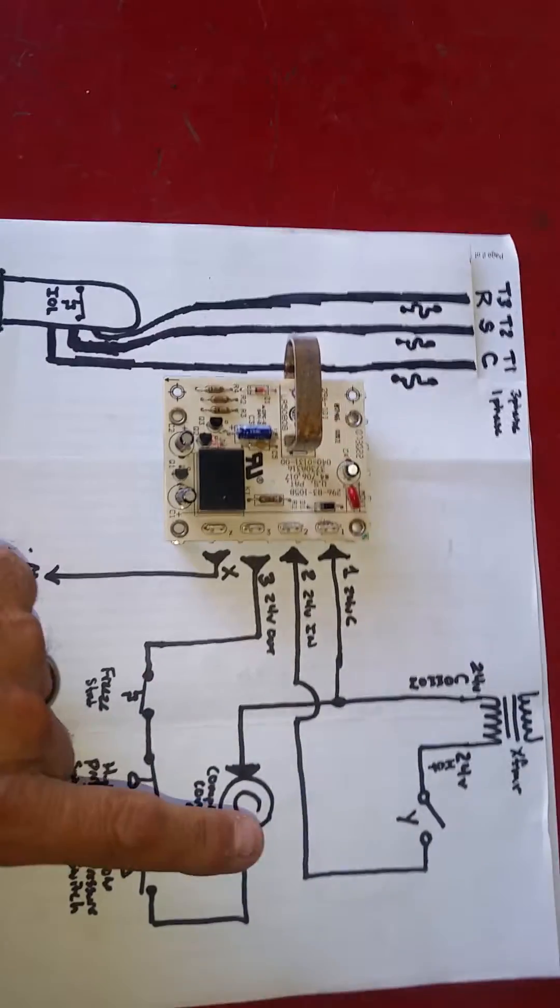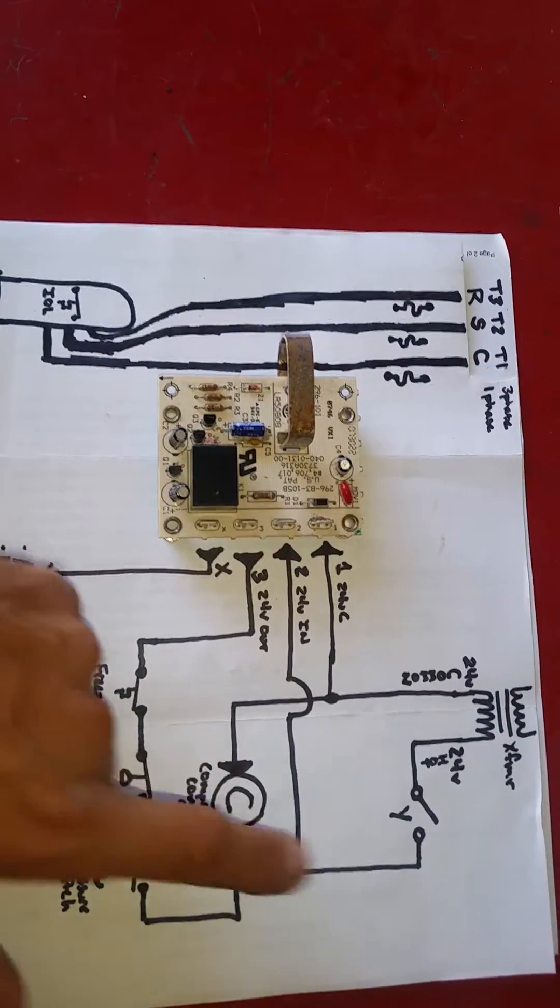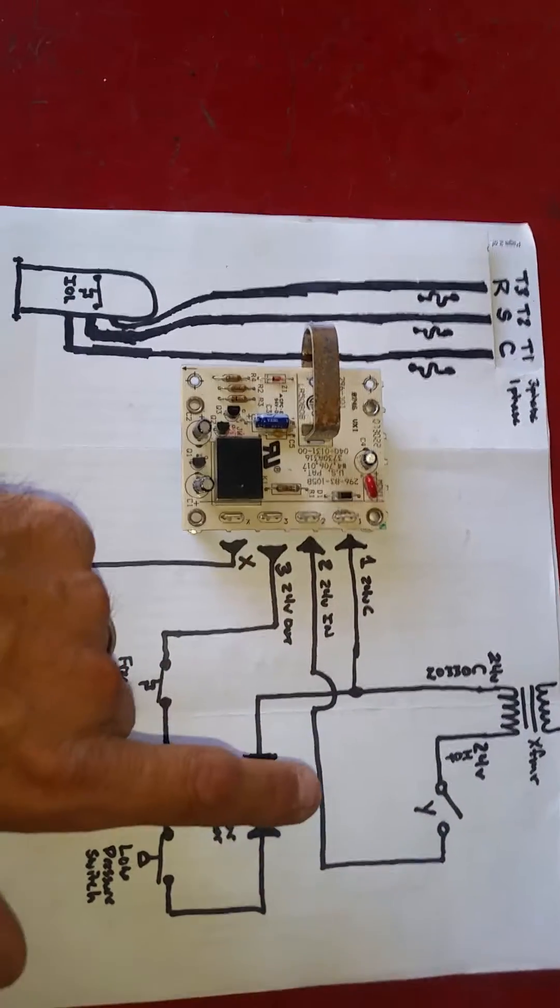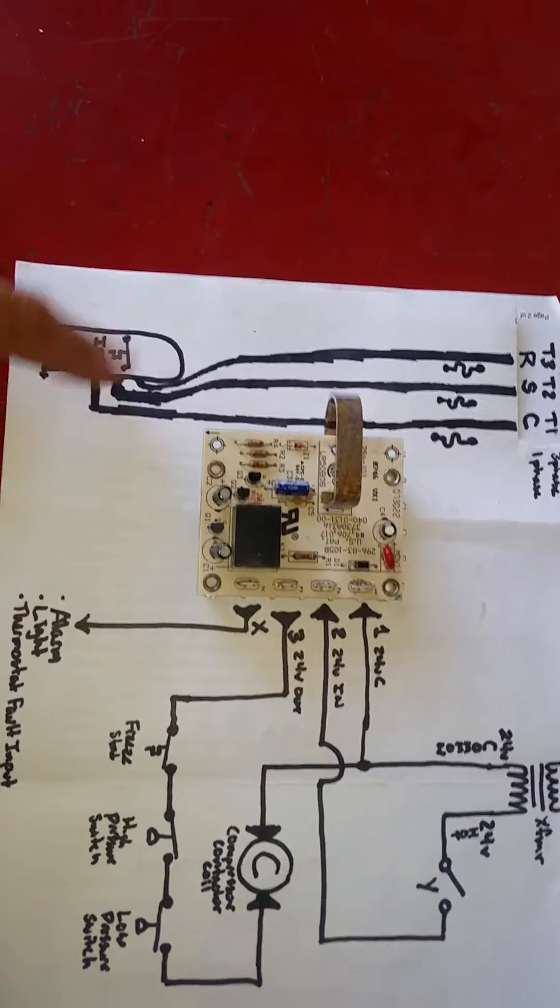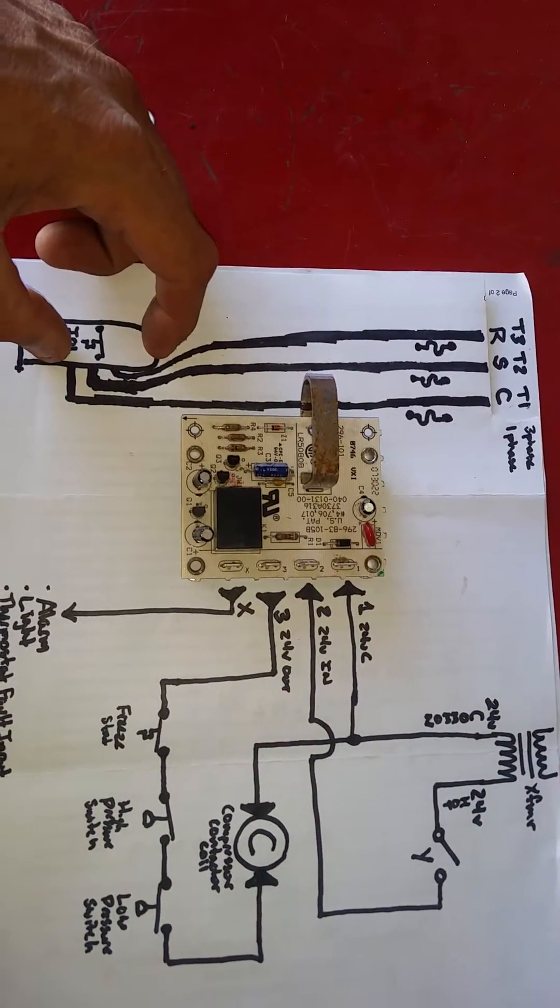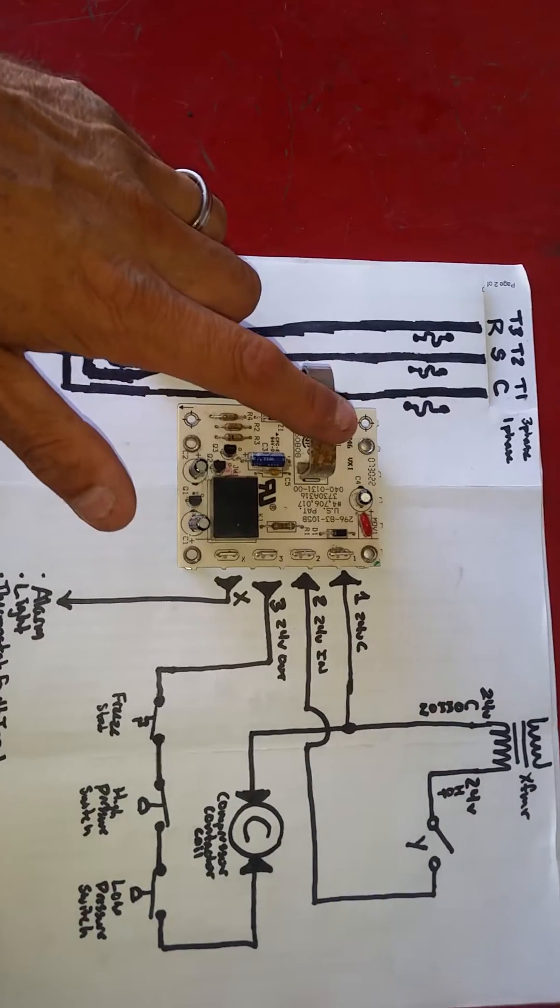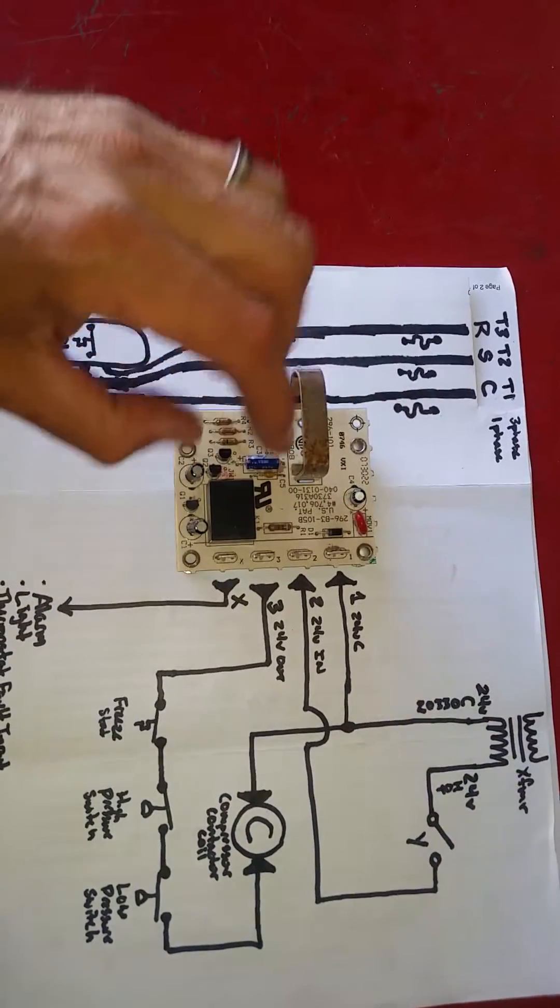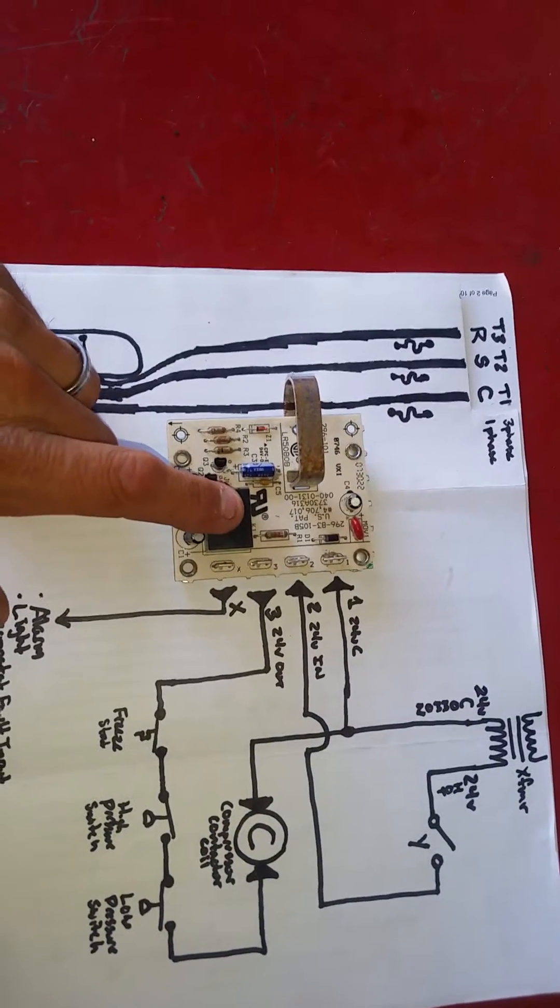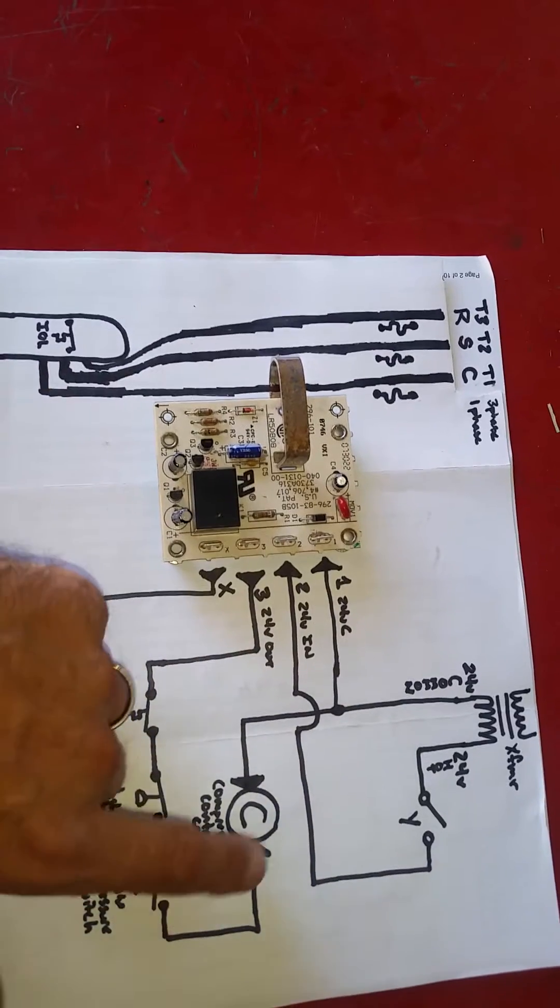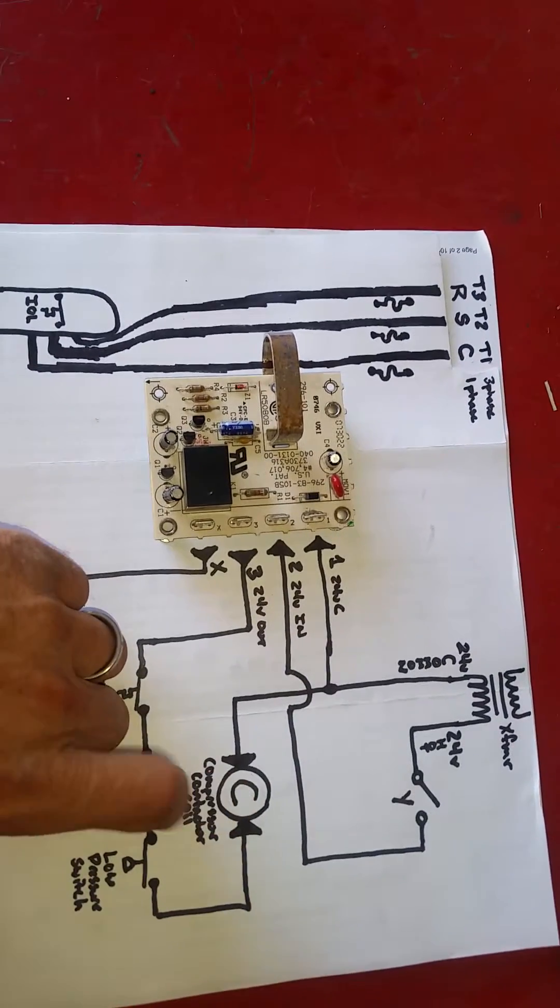Thus, as a compressor contactor closes, because we have 24 volts coming through the normally closed relay through three, as this closes, our compressor draws amperage, and of course this is going to draw more than 2.5 amps. This will sense more than 2.5 amps and keep this circuit de-energized and this relay closed. That way we will have continuous 24 volts feeding our compressor contactor.